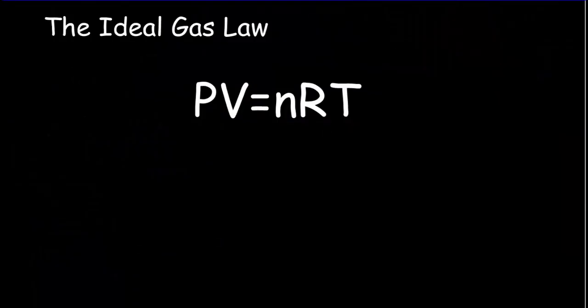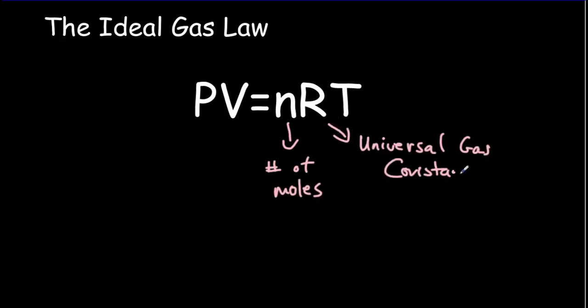The ideal gas law is the equation of state for an ideal gas. This is the ideal gas law: PV equals nRT. As a reminder, n is the number of moles, R is the universal gas constant, and since we're going to be using SI units, we're going to use 8.314 joules per mole Kelvin.